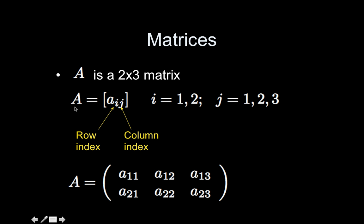You can say A equals A_ij where i goes from one to two, j goes from one to three. i in this case is the row index, j is the column index.